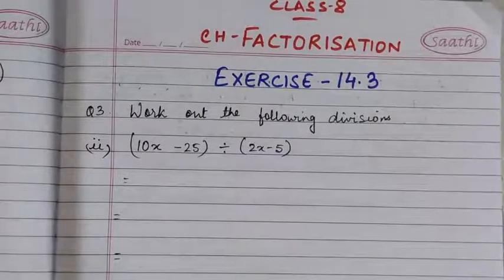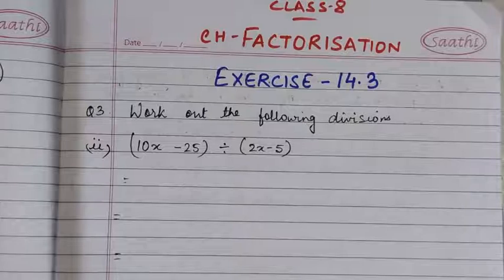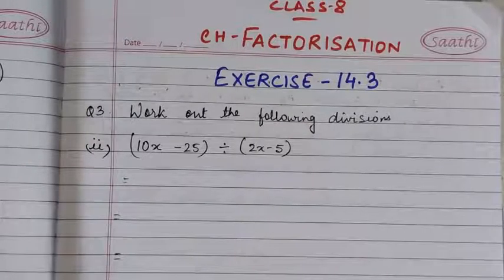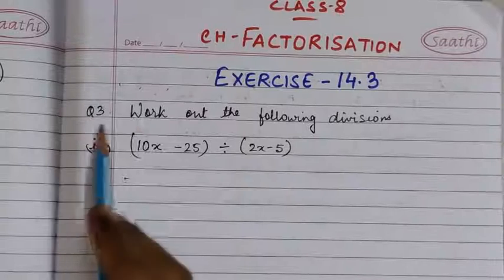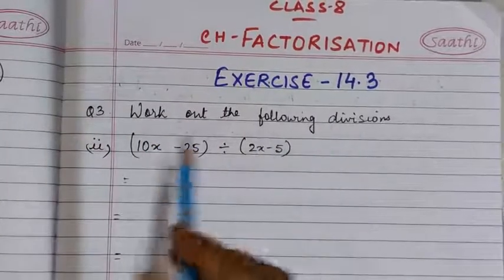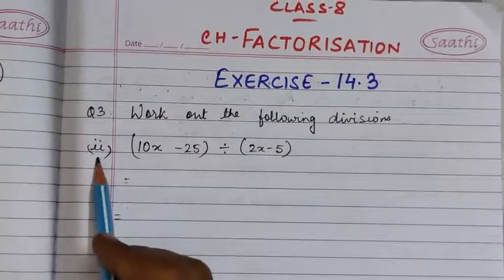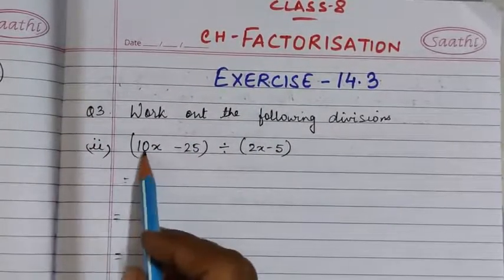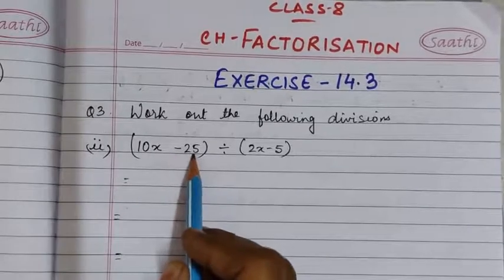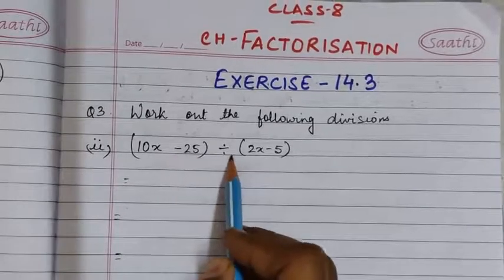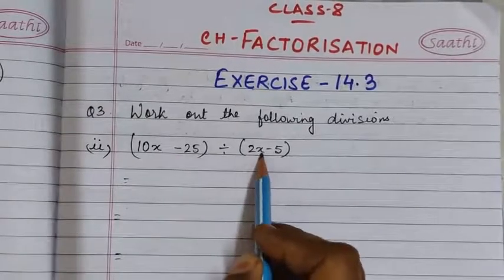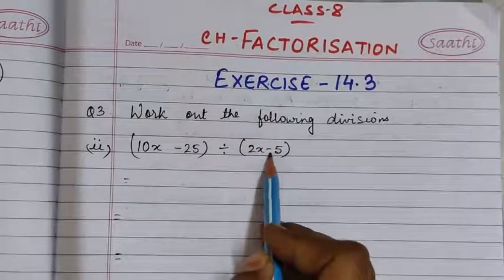We are continuing with Exercise 14.3 of the chapter Factorization, and today we are going to do question number 3. Question number 3 says: work out the following division. Number 2: we are having 10x minus 25 divided by 2x minus 5.